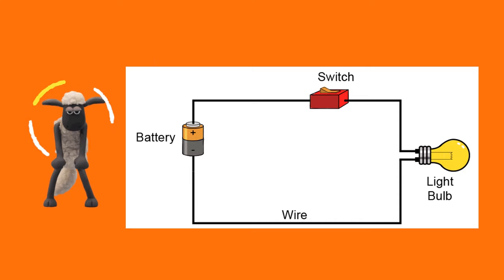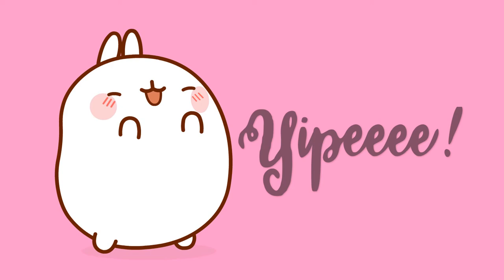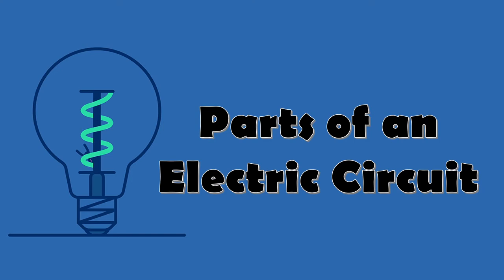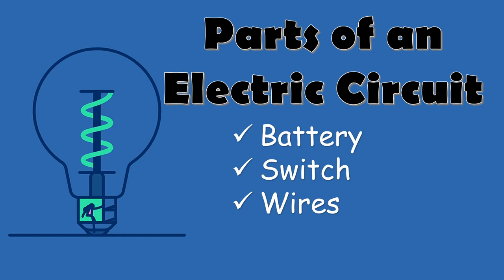We have the battery, switch, light bulb, and wires. Now, let us have the parts of an electric circuit. We have four parts of an electric circuit: battery, switch, wires, and last, bulb.